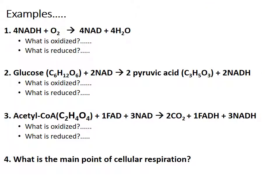In the first example, 4 NADH plus oxygen yields 4 NAD and 4 H₂O. NADH is oxidized to NAD because, remembering that loss of electrons is oxidation and we're tracking hydrogens, NADH loses hydrogens. Oxygen is reduced to water because reduction is gain of electrons, and we're tracking hydrogens — so oxygen is reduced to H₂O.